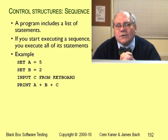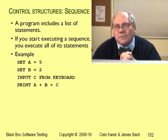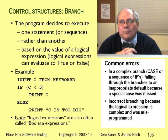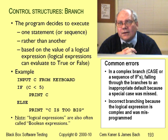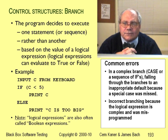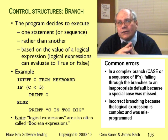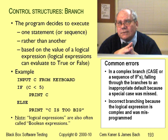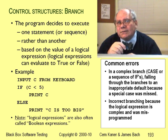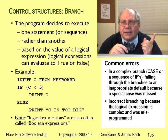The simplest control structure is the sequence. A sequence is a list of commands — you just move from one to the next. A branch is a decision point. The computer evaluates a logical expression and then does something different depending on whether the expression is true or false. For example, the expression might be x equals y. If x equals y, the program will do one thing; if x doesn't equal y, it will do something else. That's a branch.